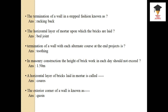The horizontal layer of mortar upon which bricks are laid is the bed joint. The termination of wall where alternate courses project at the end is called toothing. In brick masonry, the maximum construction height of brickwork in each day is 1.5 meters. A horizontal layer of bricks laid in mortar is called a course. The exterior corner of the wall is known as a coin.